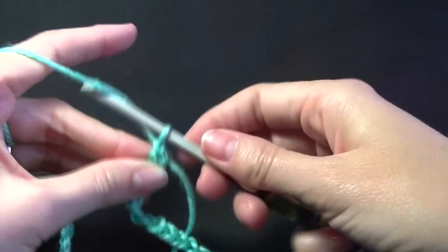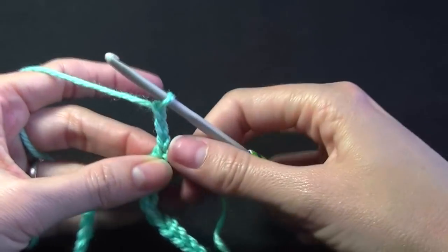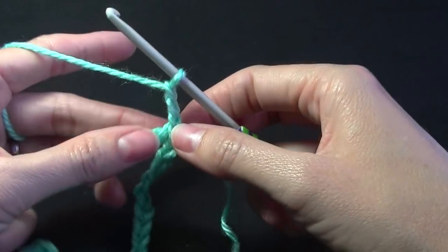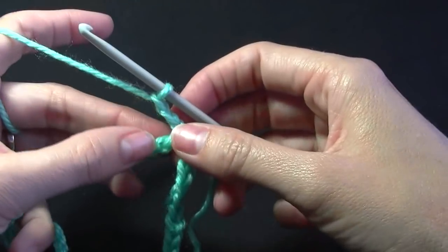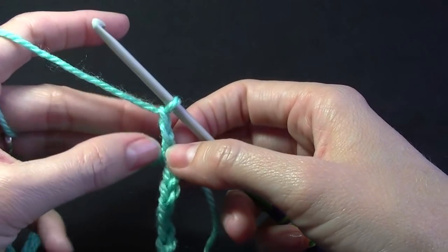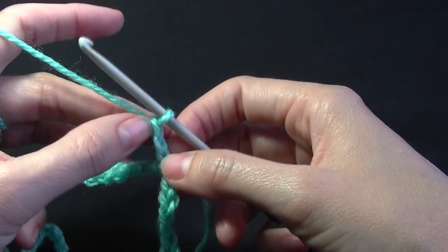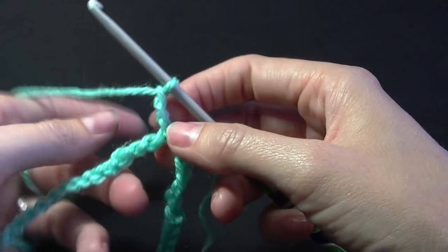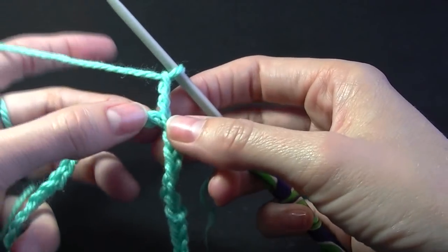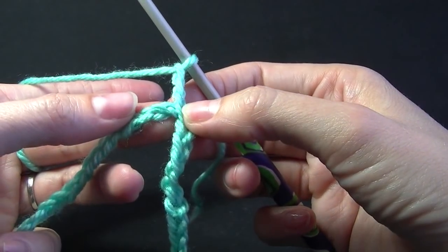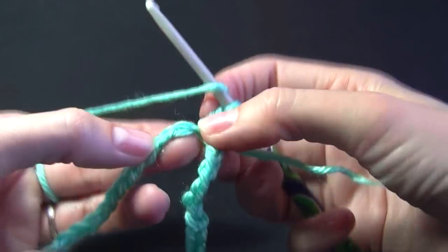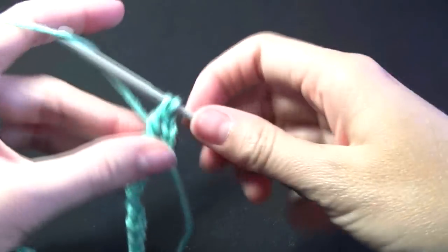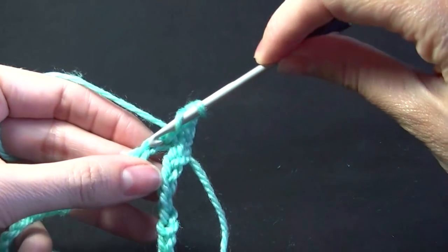You're going to chain up 3 and you can use a single crochet, a half double crochet or a double crochet for this project. Completely up to you or you can mix them up as well on each row. So if you were going to do a single you'd do 1 chain, a double crochet you'd do 2, sorry a half double crochet you'd do 2 and a double crochet you would do 3. So just spin it around so you're looking at the front of the chain, that's the flat side of the chain. I'm going to work a double crochet in each stitch around.